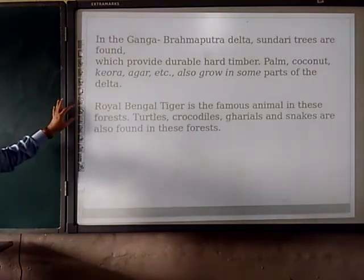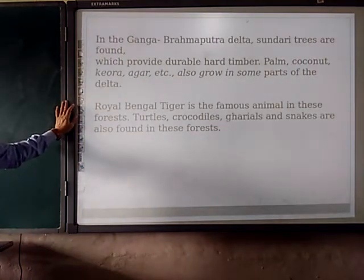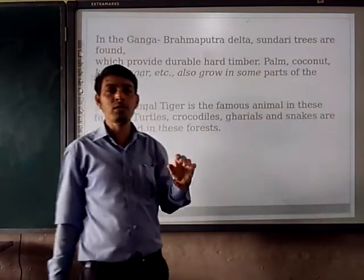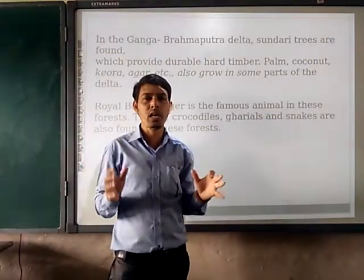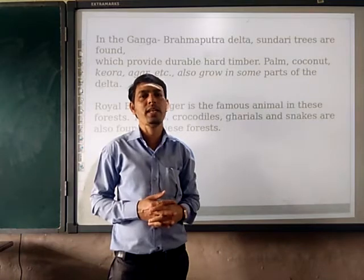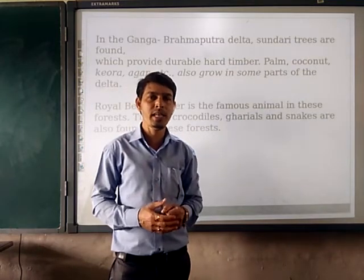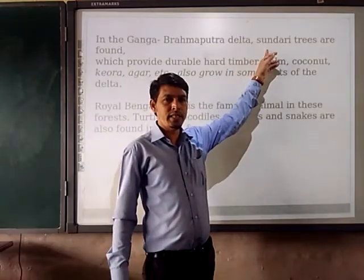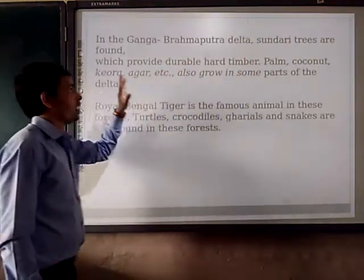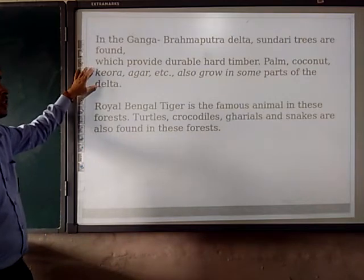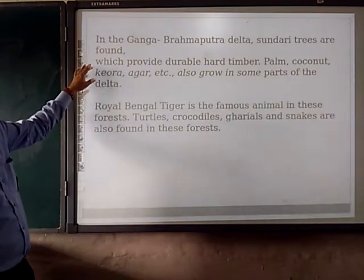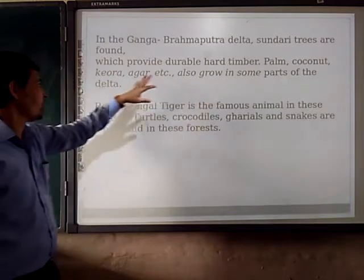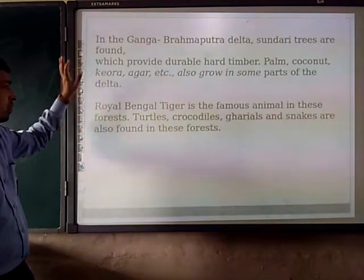In the Ganga-Brahmaputra delta, Sundari trees are found. That's why the name of the Sundarvan forest — which is the fastest and largest growing delta in the world that India is having — that's the Sundarvan delta, because the Sundari tree is there. It provides Suryabhan, Hark, Chitbah, Plum, Coconut, Coral. These are some parts of the delta where these forests are covered.